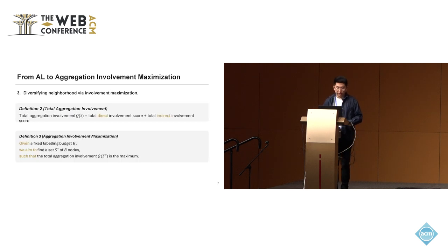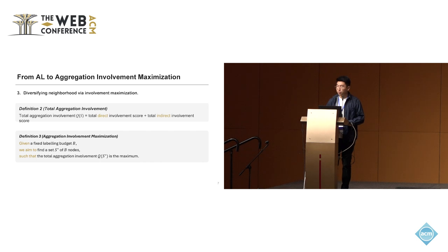We quantify neighborhood diversification based on a node's involvement, which we refer to as total aggregation involvements. The total aggregation involvement of selecting seed set S is the total of direct and indirect scores. We define the AIM problem as: given a fixed labeling budget B, find a seed set of B nodes such that the total involvement score is maximized.